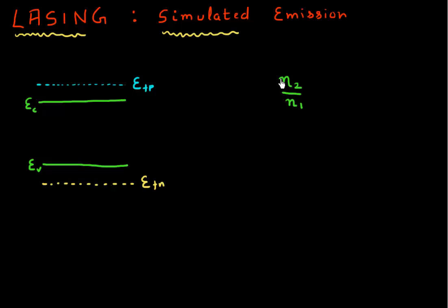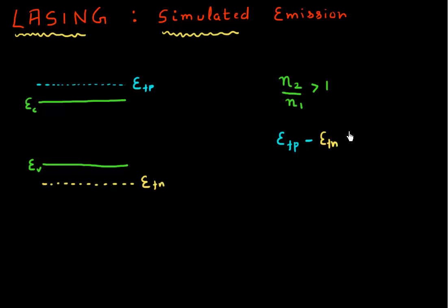So this N2 by N1 should be greater than one. And we derived that for this to happen in a semiconductor, the condition has to be that the separation between the quasi-Fermi levels — EFP minus EFN — should be greater than the bandgap of the semiconductor.